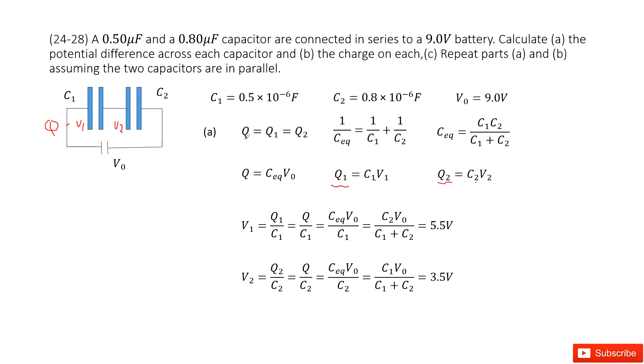The charge Q is equivalent capacitance times V0. The equivalent capacitance for this circuit is a series connection, so we get the function like this one. Then you can get equivalent capacitance in this function. In this case, Q is solved.